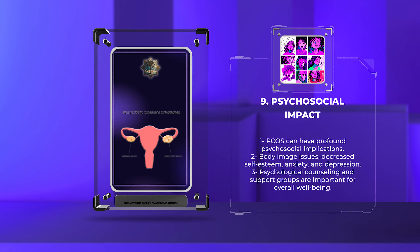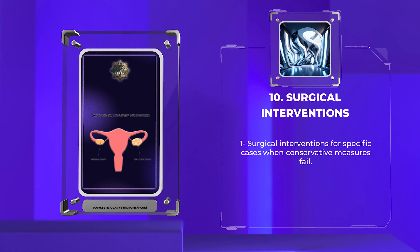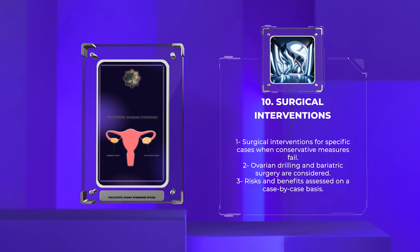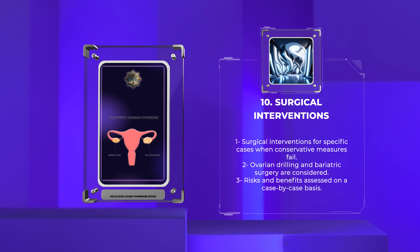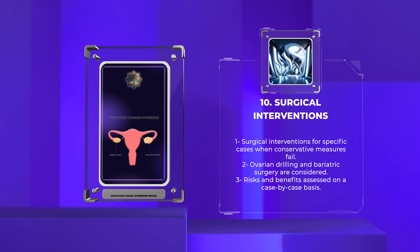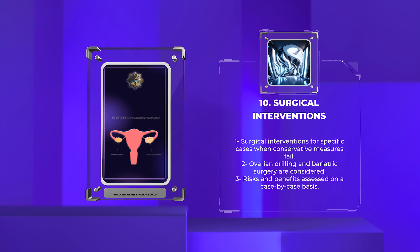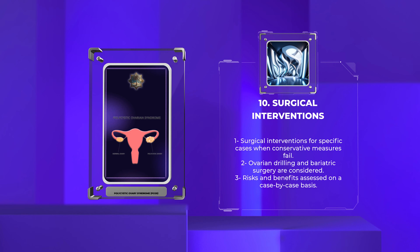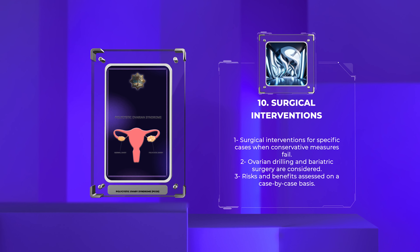Surgical interventions: Surgical interventions are considered in specific cases when conservative measures fail to yield the desired outcomes. Ovarian drilling, a laparoscopic procedure involving puncturing the ovaries with electrocautery, can restore ovulation in some individuals. Bariatric surgery may also be considered in cases where PCOS is compounded by severe obesity. However, the risks and benefits need to be thoroughly assessed on a case-by-case basis.